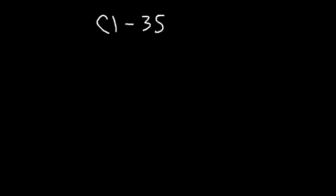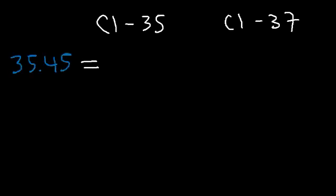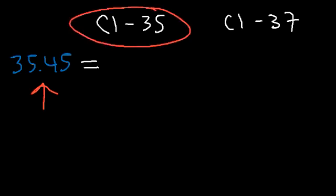Sometimes you may need to work the problem backwards and calculate the relative percent abundance of each isotope. Consider chlorine, which has two main isotopes: chlorine-35 and chlorine-37. The average atomic mass of chlorine from the periodic table is 35.45. Because the average is closer to 35 than to 37, that tells us chlorine-35 is more abundant in nature than chlorine-37.